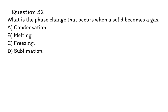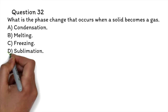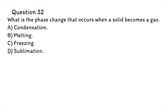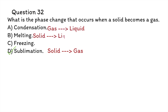Question 32: What is the phase change that occurs when a solid becomes a gas? A. Condensation, B. Melting, C. Freezing, D. Sublimation. The correct answer is D, Sublimation. Sublimation is the phase change that occurs when a solid changes directly to a gas without first becoming a liquid. Examples include dry ice (solid carbon dioxide) and mothballs (solid naphthalene). Condensation is when a gas turns into a liquid. Melting is when a solid turns into a liquid. Freezing is when a liquid turns into a solid.